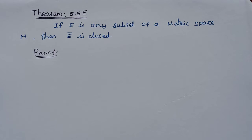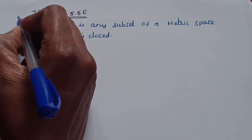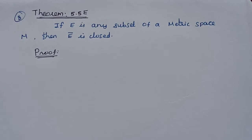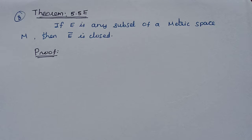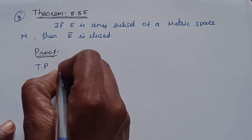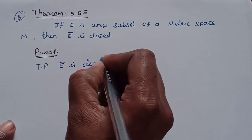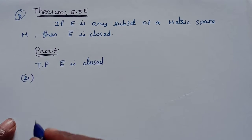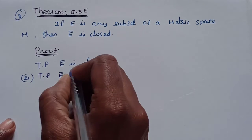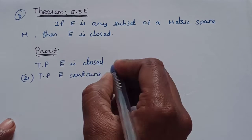In this real analysis tutorial, we look at Part B: if E is any subset of a metric space M, then E-bar (E-closure) is closed. Using the closed set definition — a set contains all its limit points — we need to prove that E-bar contains all its limit points.